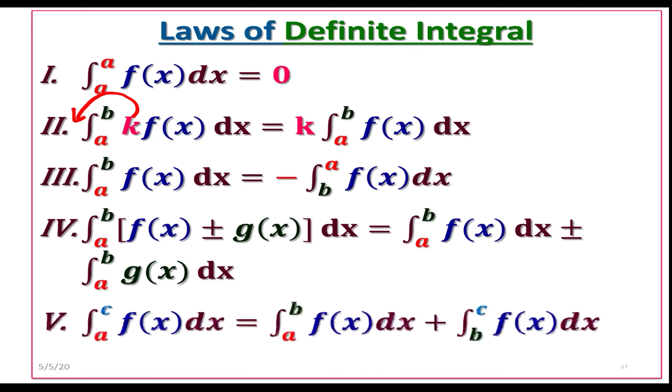Finally, the last one. The integral from a to c of f of x can be split up, can be broken down into two integrals: the first one from a to b, and the second one from b to c, where b is the point line between a and c.